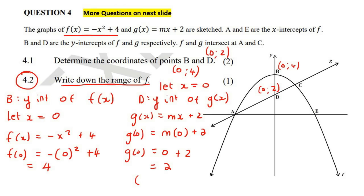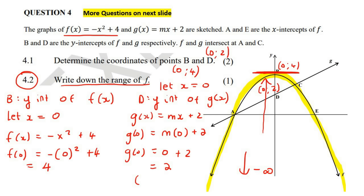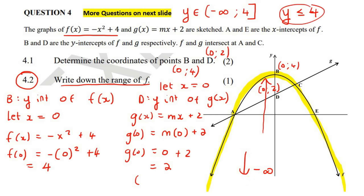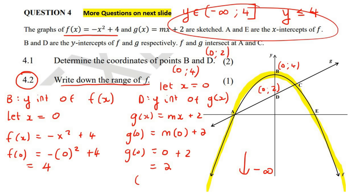The next question says write down the range of F. Remember, your range is your Y values. If you look at F, you first look at the lowest value — the arrows show the graph keeps going down to negative infinity. The highest value is at its turning point, which is four. Using interval notation: Y is an element of (negative infinity, 4]. Or in set builder notation: Y is less than or equal to four. You only need to give one of those.